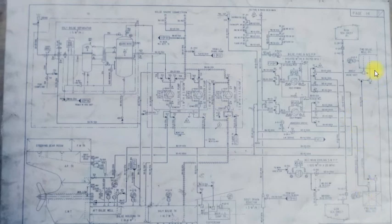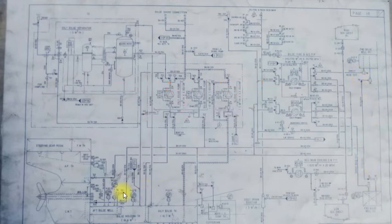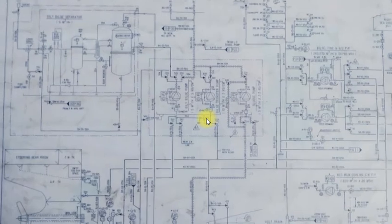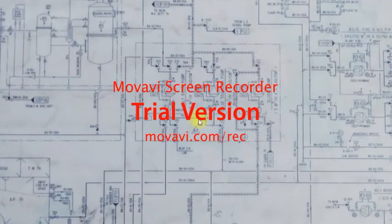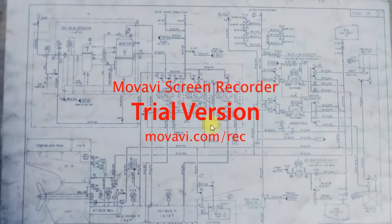Similarly, in the forward bilge there is port and starboard — there is also a strainer and a non-return valve. Now the question is: why are we only placing SDNR valves here? And if you see this line — this is from the seawater line — this valve is not a non-return valve. But this is a non-return valve, and this is a non-return valve. Any component placed in a line has a reason for it.